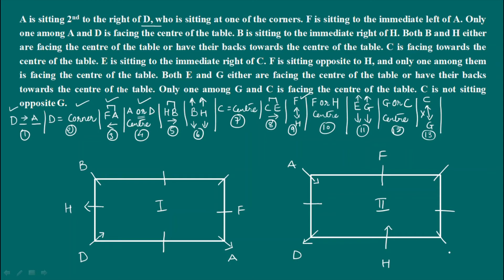Now applying the clue that B and H are in the same direction: both are inside or both are outside. In the first possibility these two are inside, and in the second condition this plays out differently. From clue 4, only one of A and H faces the center. If you see the outside of the middle then you see the inside, and if you see the inside then you see the outside. This is now clear.